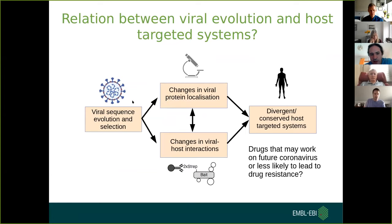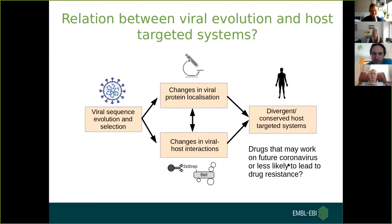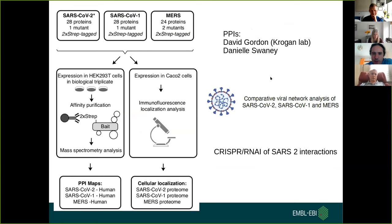From a more global perspective, by comparing these three viruses, we may better understand the relationship between viral sequence evolution, selection in the hosts, and how this relates to differences in pathogenicity or host targeting systems. By looking at conserved targeted systems, this may help us understand what drugs could target future coronaviruses or drugs that will be less likely to lead to drug resistance. This is really the focus of this project.